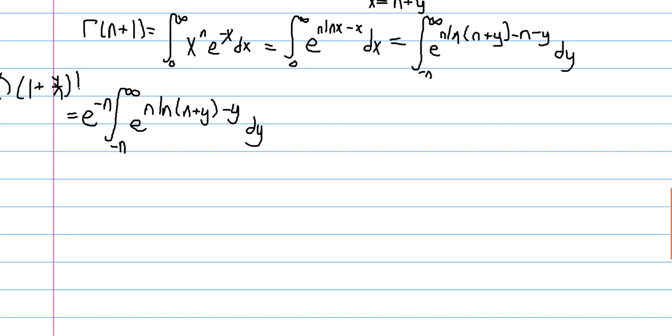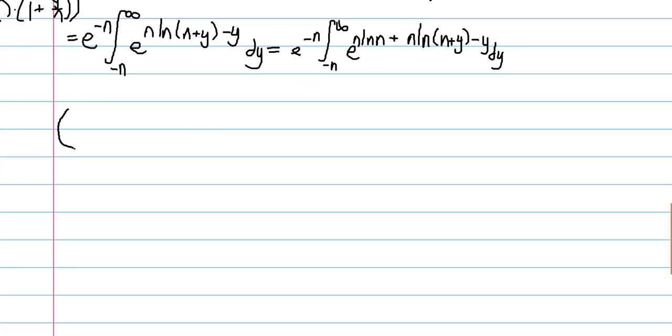And we know that when we take the natural log of a product, we get a sum. And then we have the n out front, so that will distribute. And so, once we apply that factorization, we get e to the n ln n plus n times the natural log of 1 plus y over n minus y. Now, we notice that we have another term that's completely in terms of constants. So, e to the n ln n is actually equal to n to the n. And so, we can bring that out of the integral, and n to the n times e to the negative n is equal to n over e to the n.